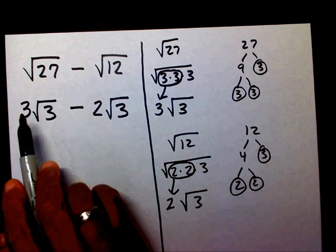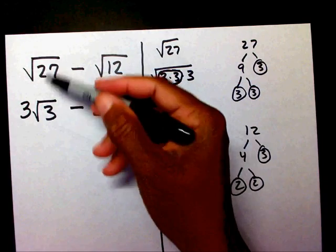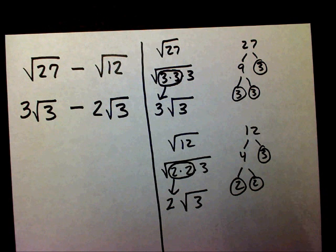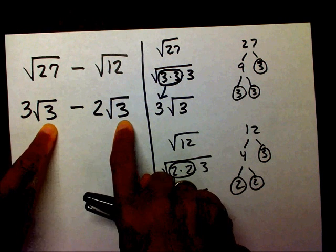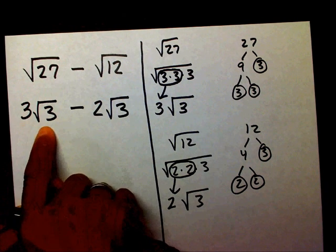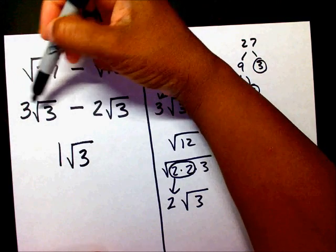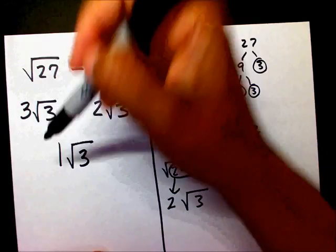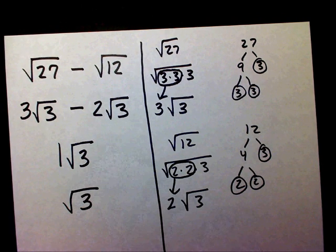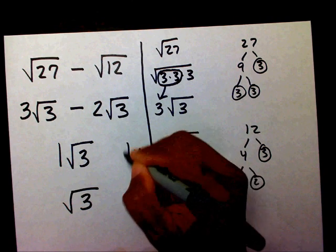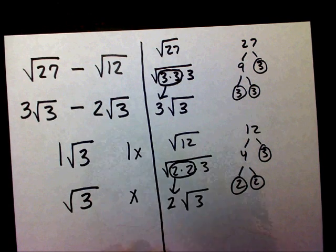Now I have 3 radical 3 minus 2 radical 3. I check that both radicals are the same — they are both radical 3 — so I can subtract: 3 radical 3 minus 2 radical 3 equals 1 radical 3. That's just like saying 3 apples minus 2 apples equals 1 apple. I can simply write radical 3, since the coefficient of 1 is understood.